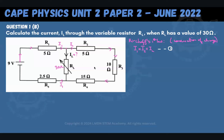We can see clearly that there are two loops. There's a clockwise loop — we'll call that Loop A. And there's another loop where the current comes the other way around — we'll call that Loop B. Now we're going to apply Kirchhoff's second law, which will give us a second equation.